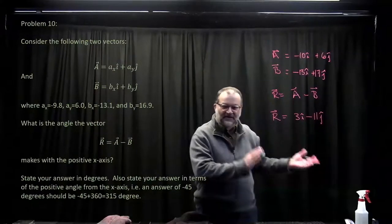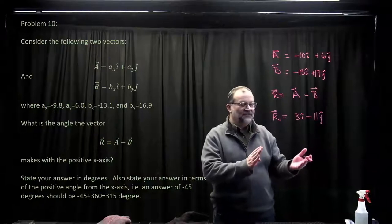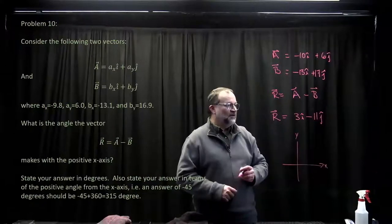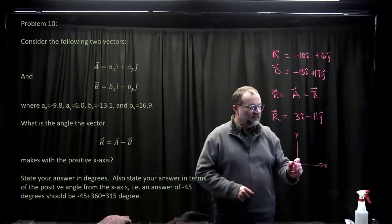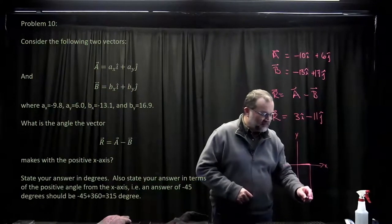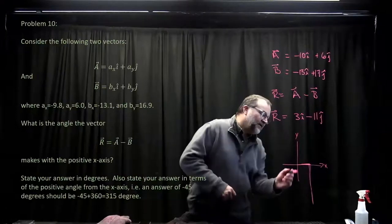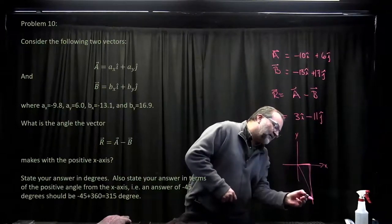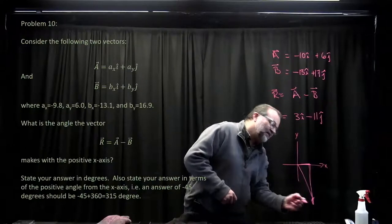What is the vector? This is the vector we're after. We go 3 in the x-direction and then minus 11 in the y-direction. So this vector is down there, right? It makes that angle.